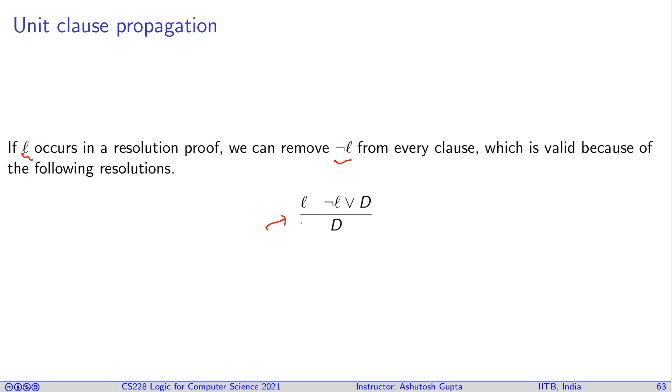And in resolution terms, this is the resolution you are doing. As soon as you find L, you aggressively apply everywhere not L or D and you get D. This is a strictly smaller clause and that is good because we want clauses to become shorter and shorter. If any resolution helps you to get strictly smaller clause, just go and do it.